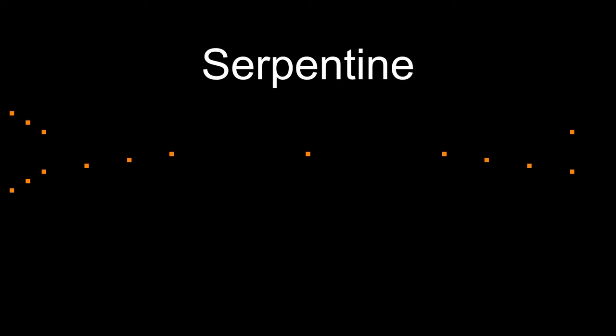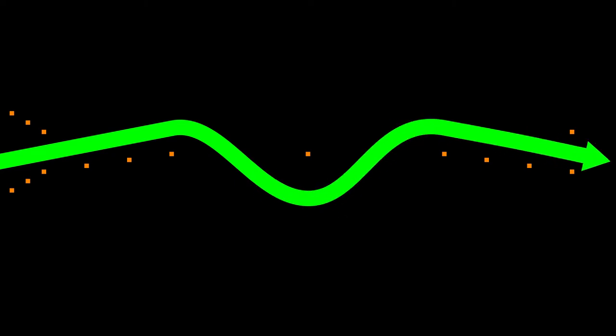This is the serpentine. You'll need to weave your bus through the cones like this. Making contact with any of the cones in this obstacle will cost you 10 points,